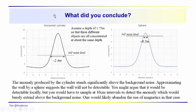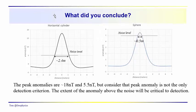Peak anomalies are 18 nanoteslas and 5.5 nanoteslas. But if you just calculate those values, you might say, okay, well, I can probably detect it. But consider that the peak anomaly is not the only detection criteria. The extent of the anomaly above the noise level will be critical to detection.